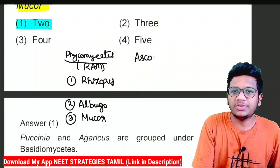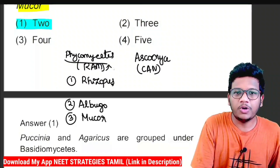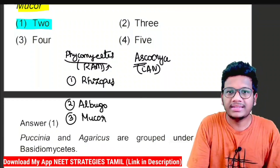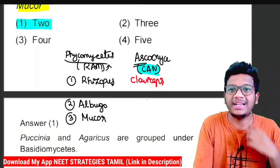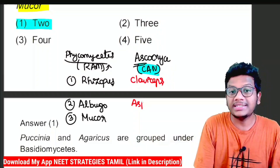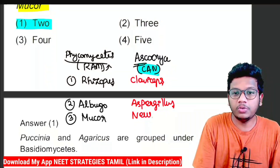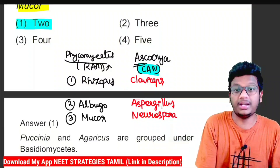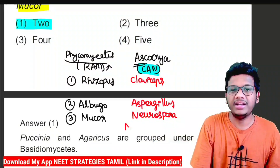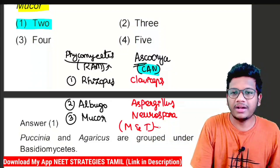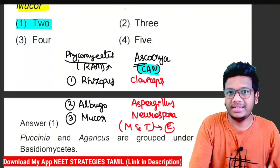Now for Ascomycetes, the mnemonic is CAN. C for Claviceps, A for Aspergillus, and N for Neurospora. These are the three classical examples. When it comes to edible fungi, Morals and Truffles — M and T — are edible fungi that belong to Ascomycetes.